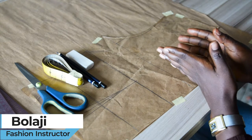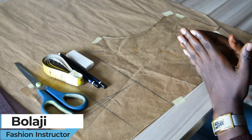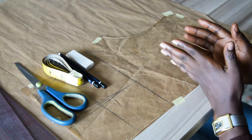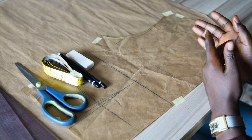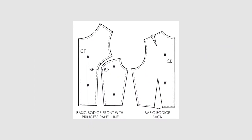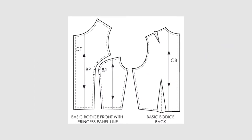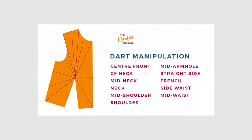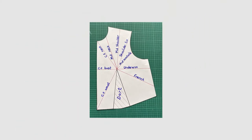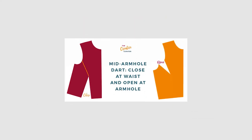A princess dart is a combination of two or more darts that meet at the apex point on a bodice pattern to create a dart style. We have various dart styles that can be applied on a bodice pattern, which includes dart connection from waist to the mid-armhole, waist to shoulder tip, waist to mid-neck, waist to center front neck depth, waist to mid-shoulder, and waist to side front seam, to mention but a few.